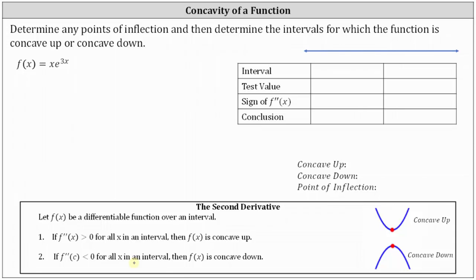The first step is to determine where the second derivative is equal to zero. Before we do this, we need to find the first derivative. To find the first derivative, we need to apply the product rule as well as the chain rule. So f prime of x is equal to the first function of x times the derivative of the second function, which is the derivative of e to the 3x. Then we have plus the second function of e to the 3x times the derivative of the first function, which is the derivative of x.